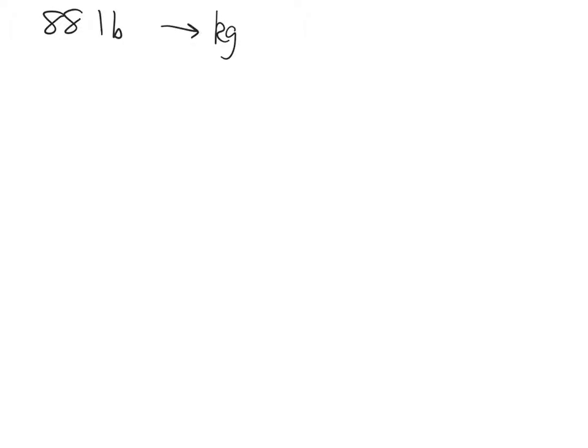Some of the things we need to know: we're given an 88-pound child, but we're going to have to convert that into kilograms. Since the medicine directions are 3.1 milligrams per kilogram per day — and remember this is not a script actually written by a doctor, so these numbers may be off since this is just a generic case study — you're told to divide this up into three doses per day.